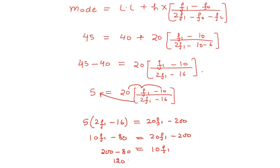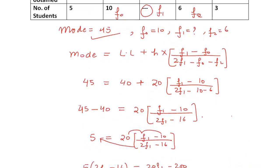And 200 ko left side le aega, so it will give you 200 minus 80. So 120 is equal to 10F1. F1 ki value kitna a jae ga, 120 over 10. So yes, 0 se 0 cancel ho jae ga, and your F1 will be 12.